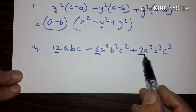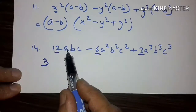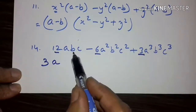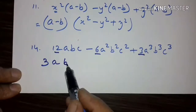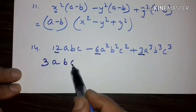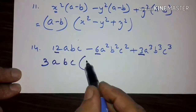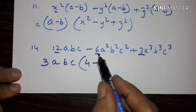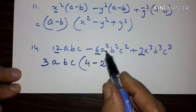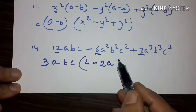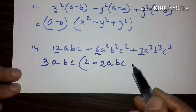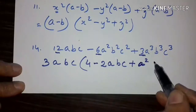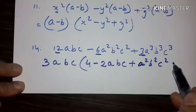In the next expression, 3 is common. We have 3A, A squared, and A cubed — so A is common. We have B, B squared, and B cubed — so B is common. We have C, C squared, and C cubed — so C is common. Taking out 3ABC, what remains is 4. Then minus 3 into 2: 3 has gone out so 2 remains, A has gone out so A remains, B has gone out so B remains, and C remains. Plus 3 has gone out, and A squared, B squared, and C squared remain.